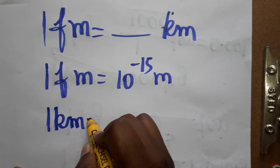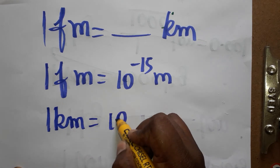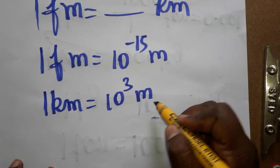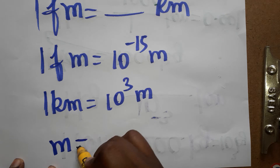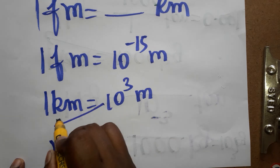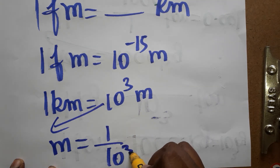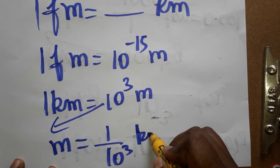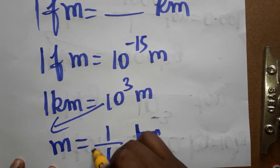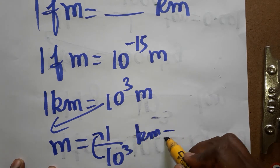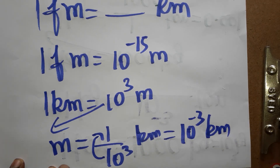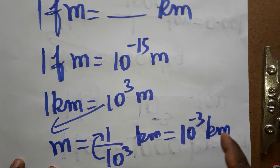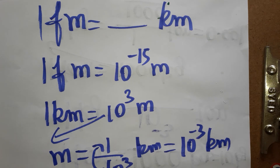One kilometer is 10 power 3, that is 1000 meter. So if you want meter to kilometer: one meter is equal to 10 power minus 3 kilometer, since bringing 10 power 3 from denominator to numerator gives 10 power minus 3.